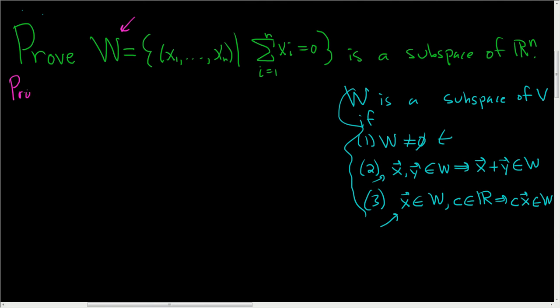So proof. So I'll number the steps. So one, we have to show that W is non-empty. So you have to think of a vector that's in this set. So what does it mean to be in this set? It means that when you add up the components of your vector, you get zero. So the easiest choice is this one.